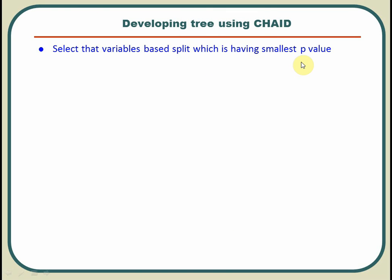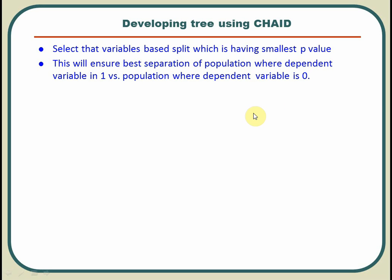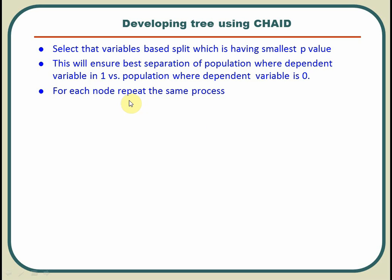Selecting the smallest p-value ensures the best separation of the population — where the dependent variable is 1 versus where the dependent variable is 0. So when the dependent variable is categorical, using the smallest p-value gives you the best separation. You then repeat the same process for each node — that's how CHAID works.